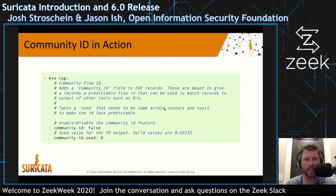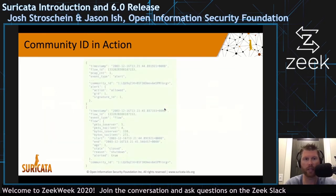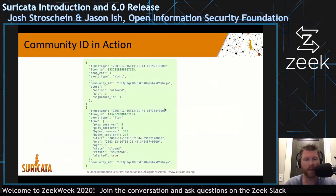In the Suricata YAML, you can see the two values — the community ID and the community ID seed — with some directions in the comments. At the very bottom of the output, you can now see the community ID string associated with this record type, which happened to be for a flow event.